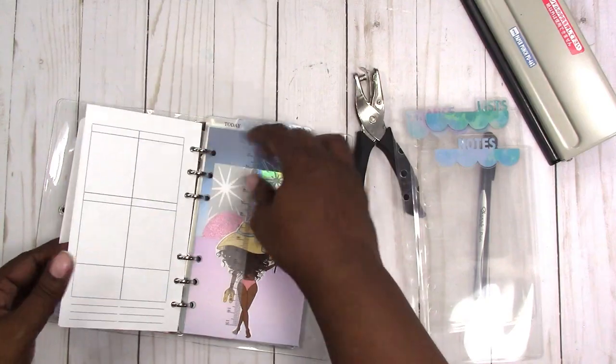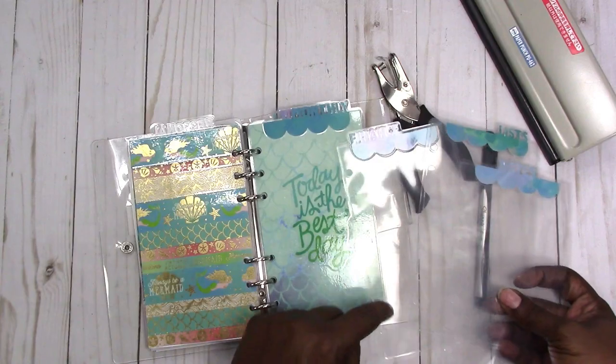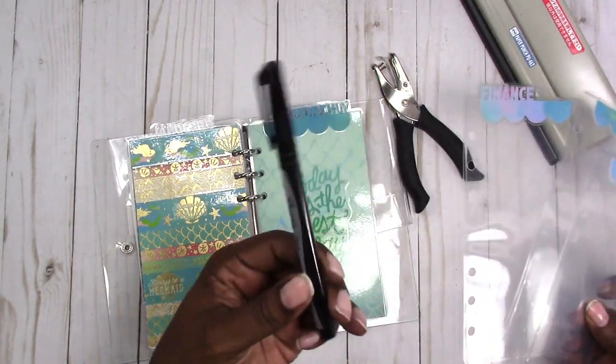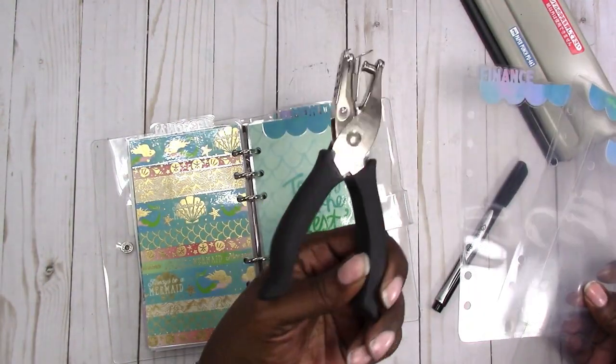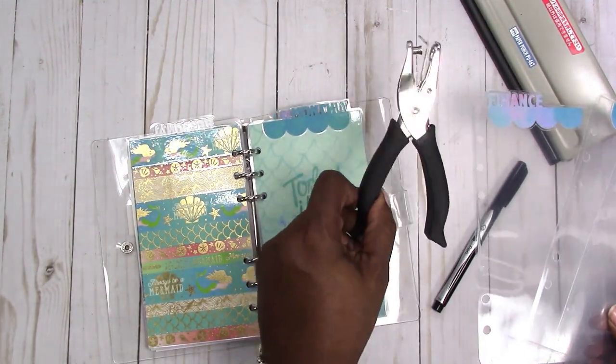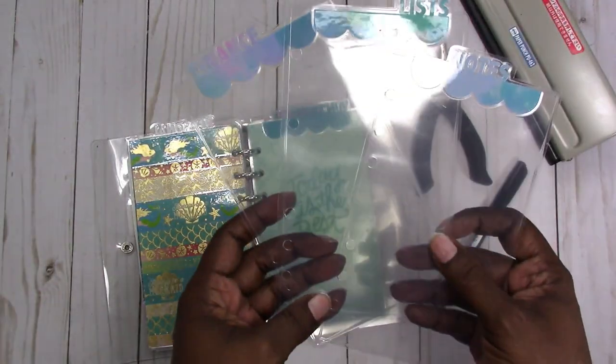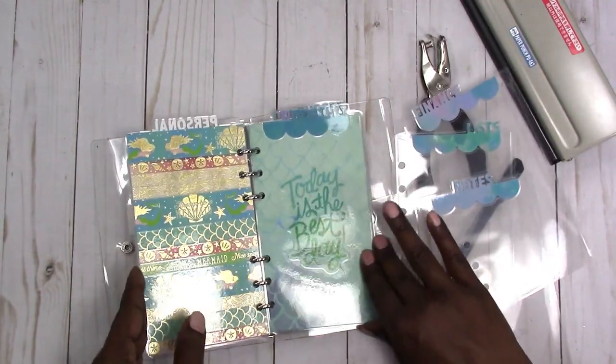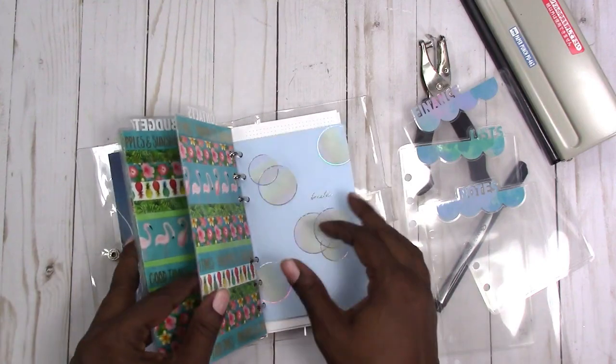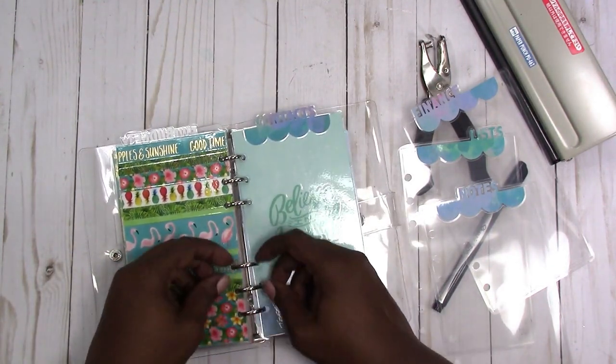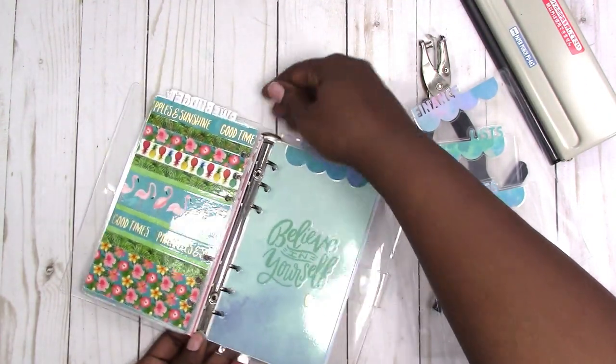So what I did was just take one of the inserts or the other dashboards that I have in here and just line it up. Using my sharpie, I drew the place where the punch needed to be. Then I just took this regular old dollar tree hole punch and punched my holes as you can see.